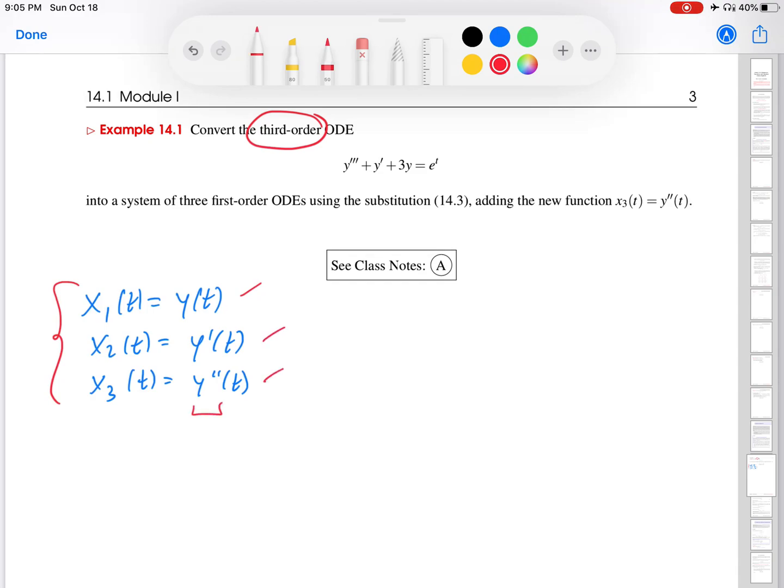And then I stop with the number of variables equal to the order of the ODE. So because I start with y as x1, the last variable will always be one derivative order lower than that number down here.